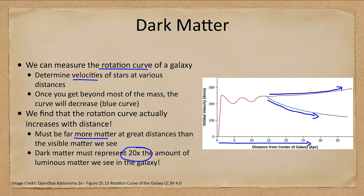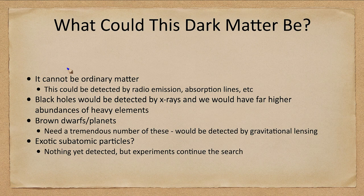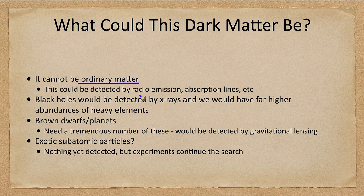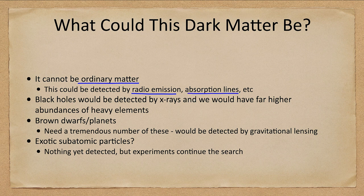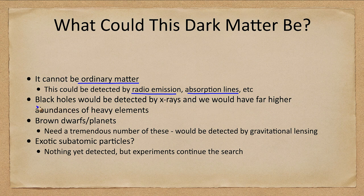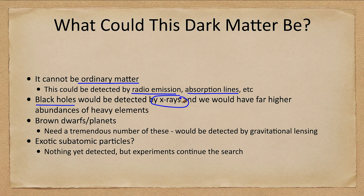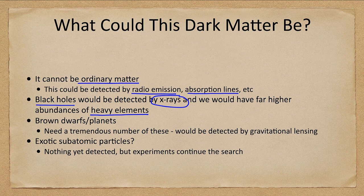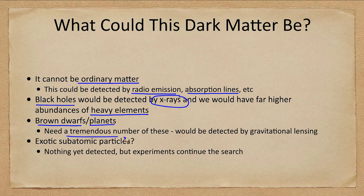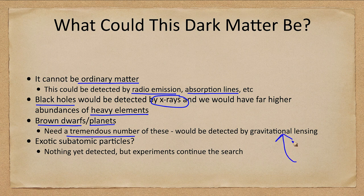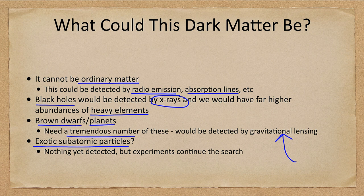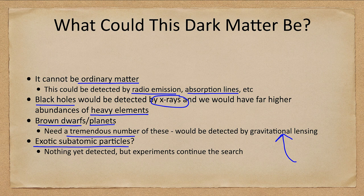Now what could this be? We can start eliminating things. We know it cannot be ordinary matter—we would detect it. It would give off radio emissions or absorption lines. Could it be black holes? They're hard to see, but we detect them by x-rays, and if there were that many black holes we'd have a lot more heavy elements. Brown dwarfs or planets—very small objects—are also too low mass and would be detectable by gravitational lensing. One of the other thoughts is exotic subatomic particles, weird particles which have mass but don't interact with the rest of matter. We talked about the neutrino, but we need something similar with a much higher mass.